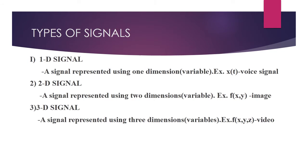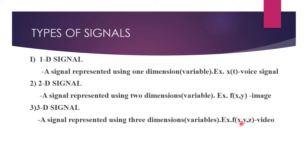Next, we are going to see the types of signals. There are three types: one-dimensional, two-dimensional, and three-dimensional signals. A one-dimensional signal depends on only one variable, represented as x(t). A two-dimensional signal depends on two variables — for example, an image has length and breadth, so f depends on x and y. A three-dimensional signal depends on three variables x, y, and z — the best example is video signals.